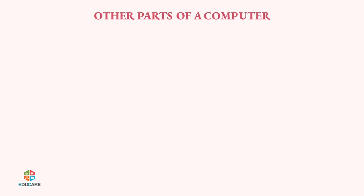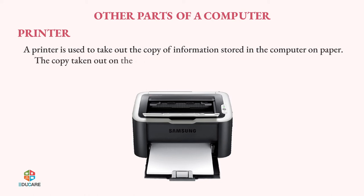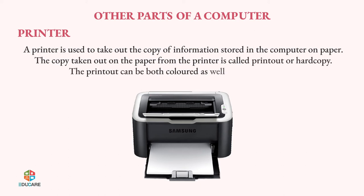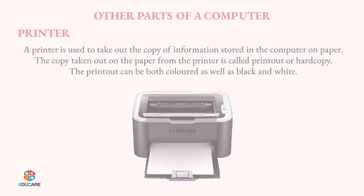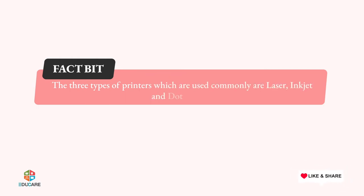Other Parts of a Computer — Printer. A printer is used to take out the copy of information stored in the computer on paper. The copy taken out on paper from the printer is called a printout or hard copy. The printout can be both colored as well as black and white. Factbit: The three types of printers which are used commonly are laser, inkjet and dot matrix.